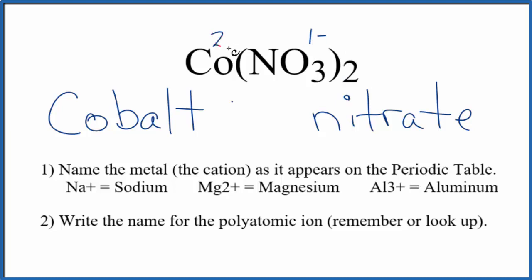So all these numbers add up to zero. They give us a net charge of zero. Since we have a two plus on the cobalt, we need to write that in the name. So we're going to put cobalt two in parentheses nitrate. So the name for Co(NO3)2 is cobalt two nitrate.